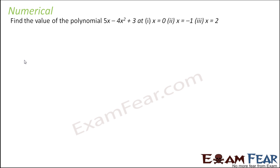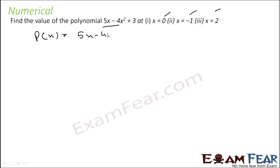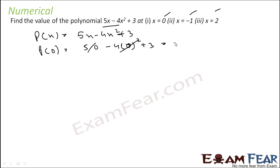Let's take a few more numericals. We have to find the value of the polynomial at x=0, x=minus 1, and x=2. Given p(x) = 5x minus 4x squared plus 3, to find p(0), just replace x with 0. The x terms become 0, and you get 3.